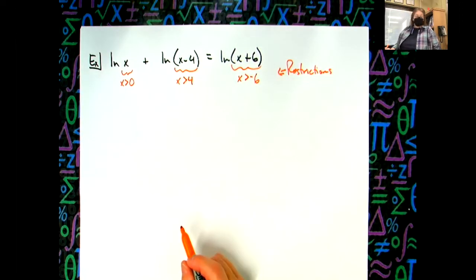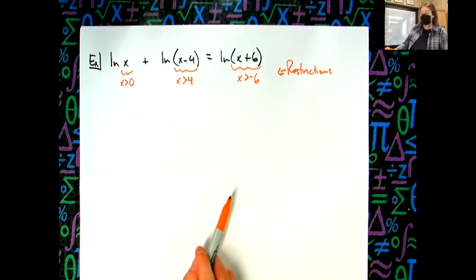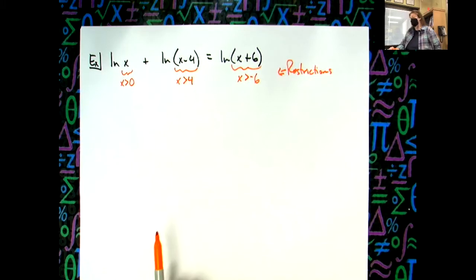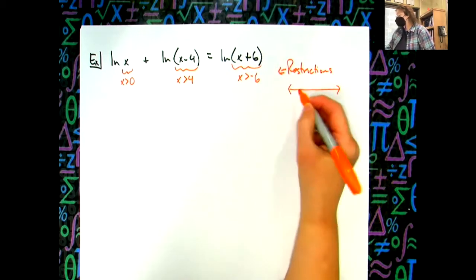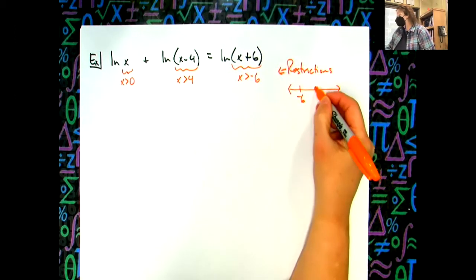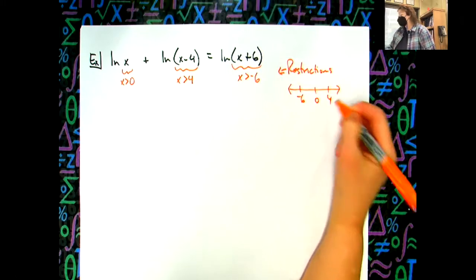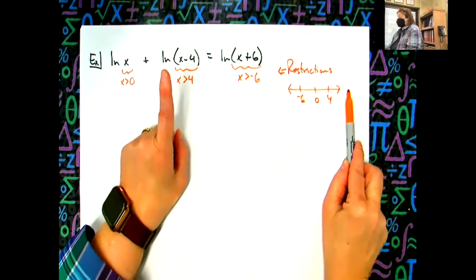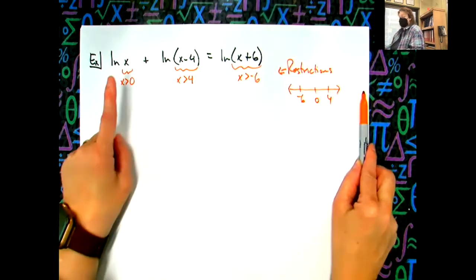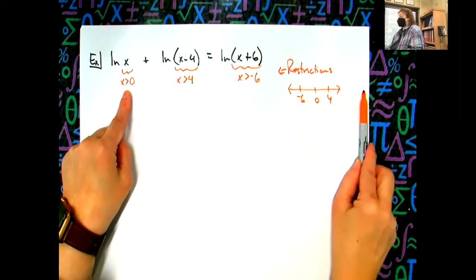Okay, so overall, let's think about that for a minute. Let's do a number line right here. Here's negative six, here's zero, here's four. My first restriction says it's got to be bigger than negative six, this restriction says it's got to be greater than negative four, this has got to be greater than zero. So overall, my final answer has to be greater than four.